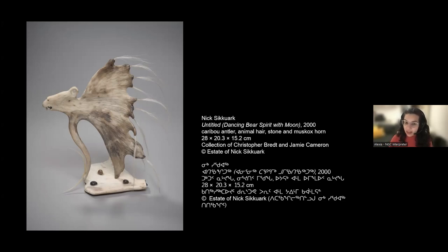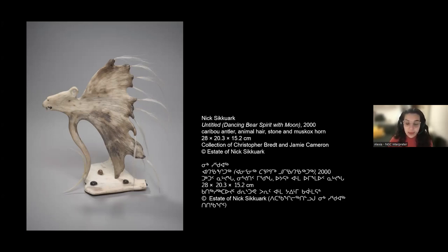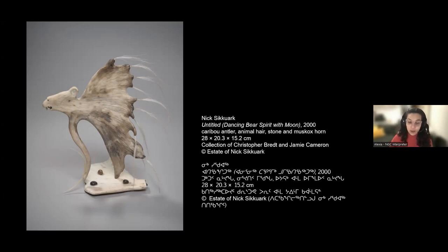Sikwark was orphaned at a very young age, then lived with relatives, then with the Oblate Fathers. As a young man, he studied for the clergy in Winnipeg and Ottawa before settling in Kugaruk, Nunavut. It was in 1976, after a trip to Montreal for the Olympic Games, that he began working as a full-time artist, creating sculptures that appealed to his imagination or reflected his dreams.